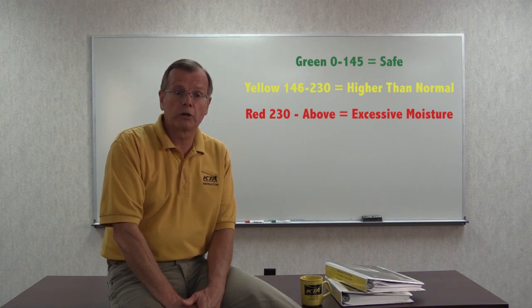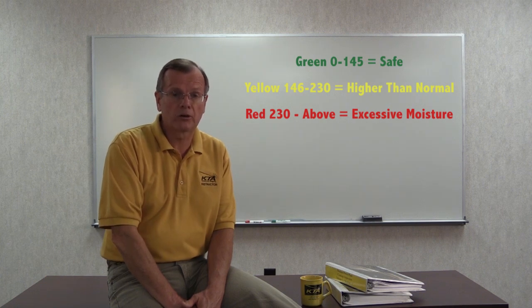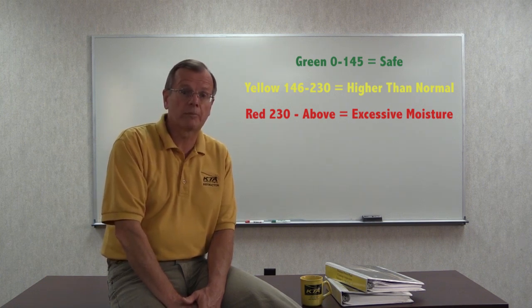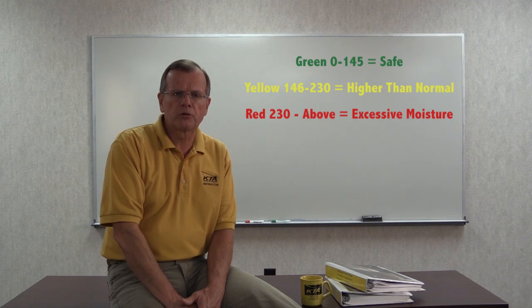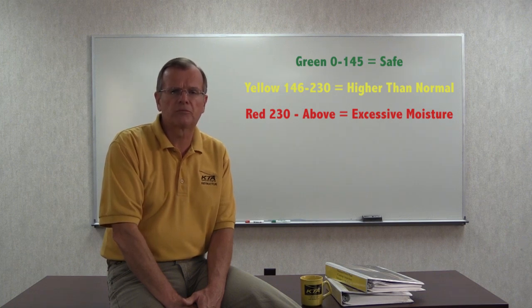Green or good is usually 0 to 145 units which is safe air dry conditions. Yellow is between 146 and 230 units signifying moisture levels are higher than normal but not critical. Further investigation is recommended. And red is greater than 230 units representing excessive moisture levels.